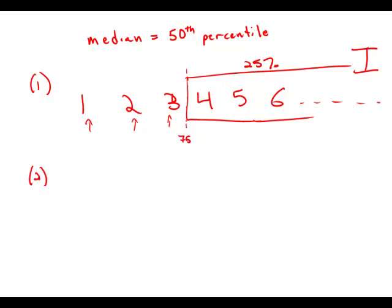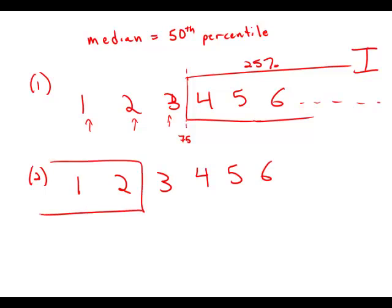Statement number two tells us 35% of the projects at Company Z have two or fewer employees assigned to each project. Notice incidentally the correct grammatical use of the word fewer, something to keep in mind on sentence correction. At any rate, two or fewer represent 35% of the projects. So this line right here between two and three is the 35th percentile. Somewhere above that is the 50th percentile. Again, we don't know if that's in three, four, five, or some higher number. So this statement by itself is also insufficient.